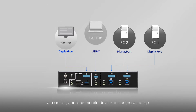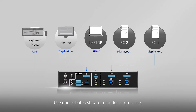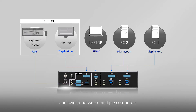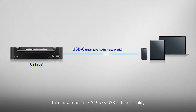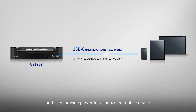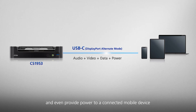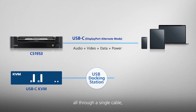Connect a monitor and one mobile device, including a laptop. Use one set of keyboard, monitor, and mouse and switch between multiple computers. Take advantage of CS1953's USB-C functionality to transfer audio, video, data, and even provide power to a connected mobile device, all through a single cable.